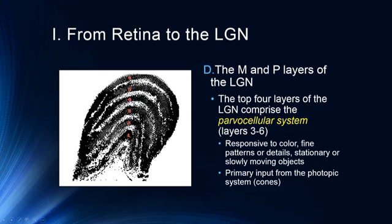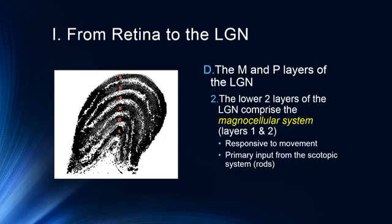Looking at an actual slice of the LGN — it looks a little bit like a fingerprint — layers 3, 4, 5, and 6 are the parvocellular system. Each layer at this point is monocular, receiving input from either the ipsilateral or contralateral retina, so each layer is coming from only one eye.